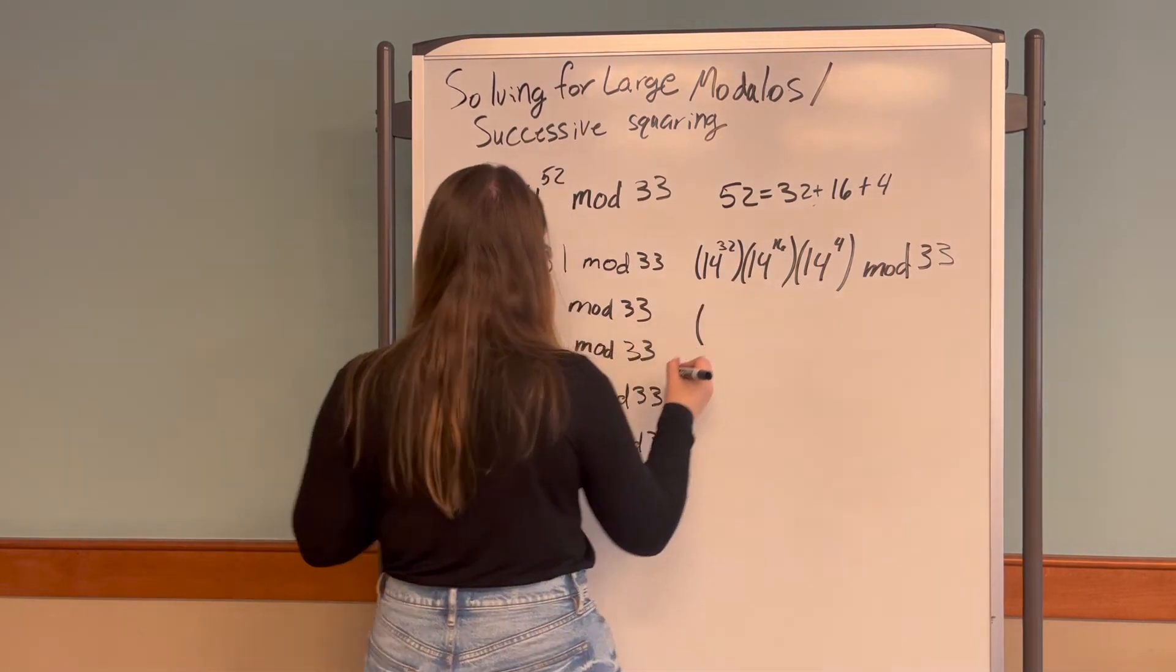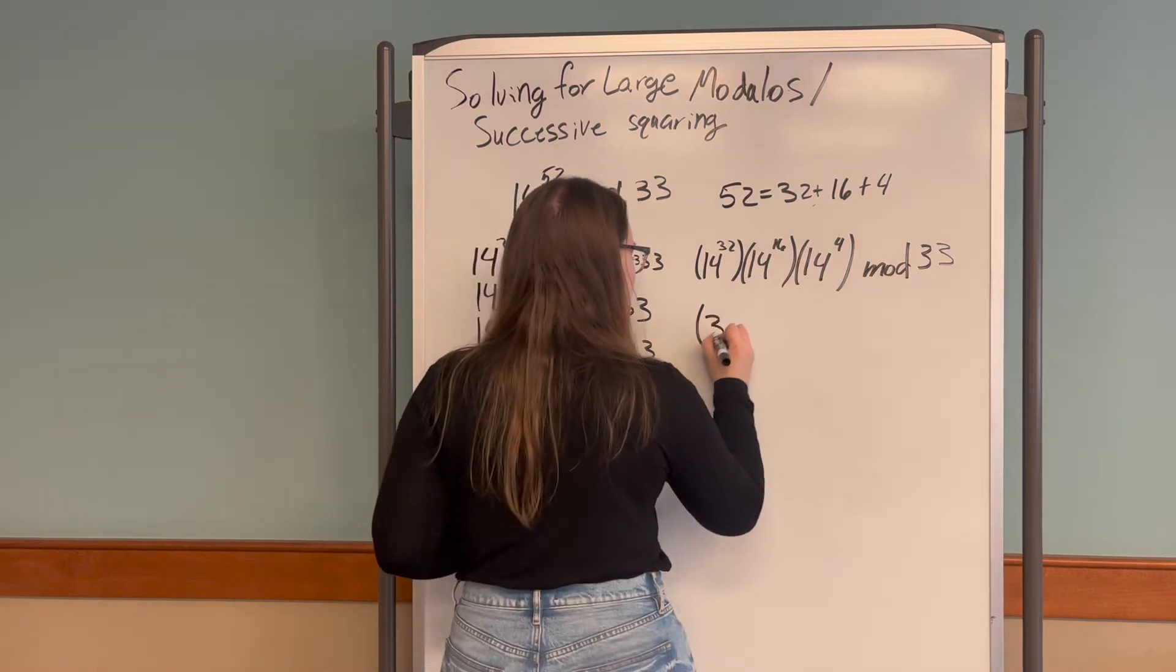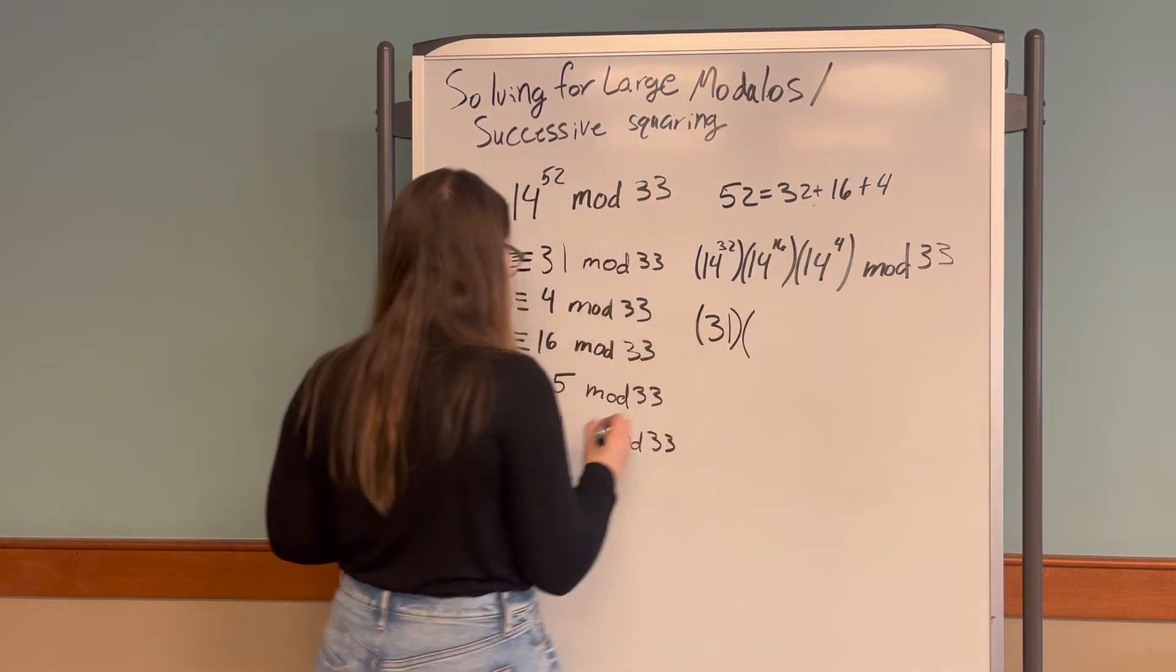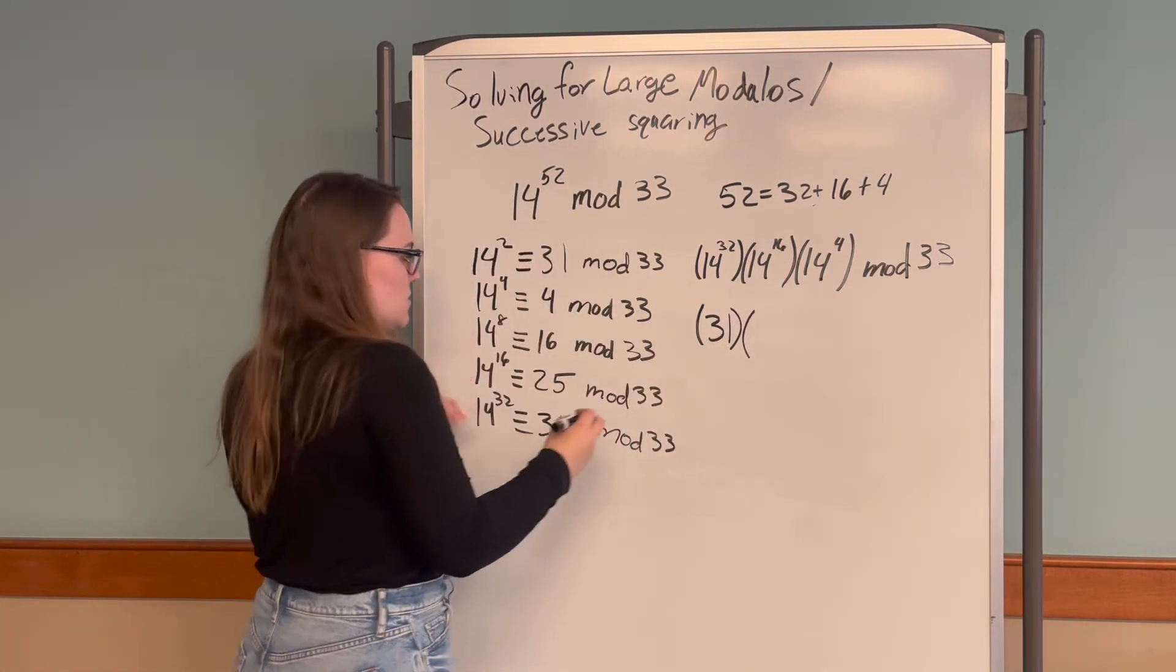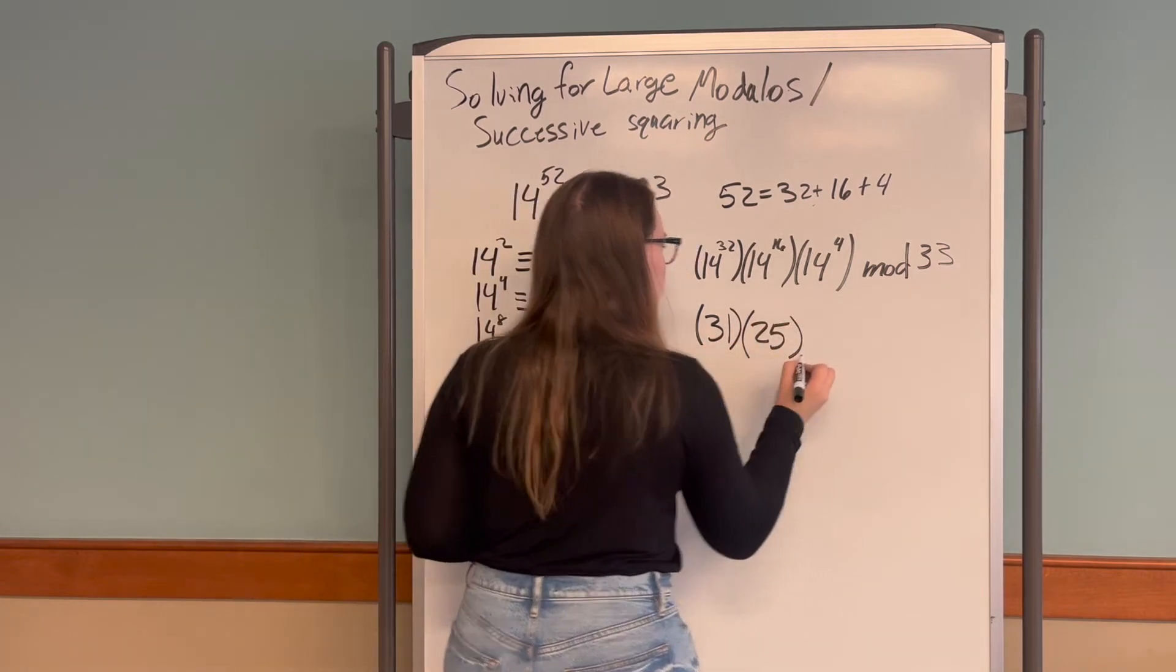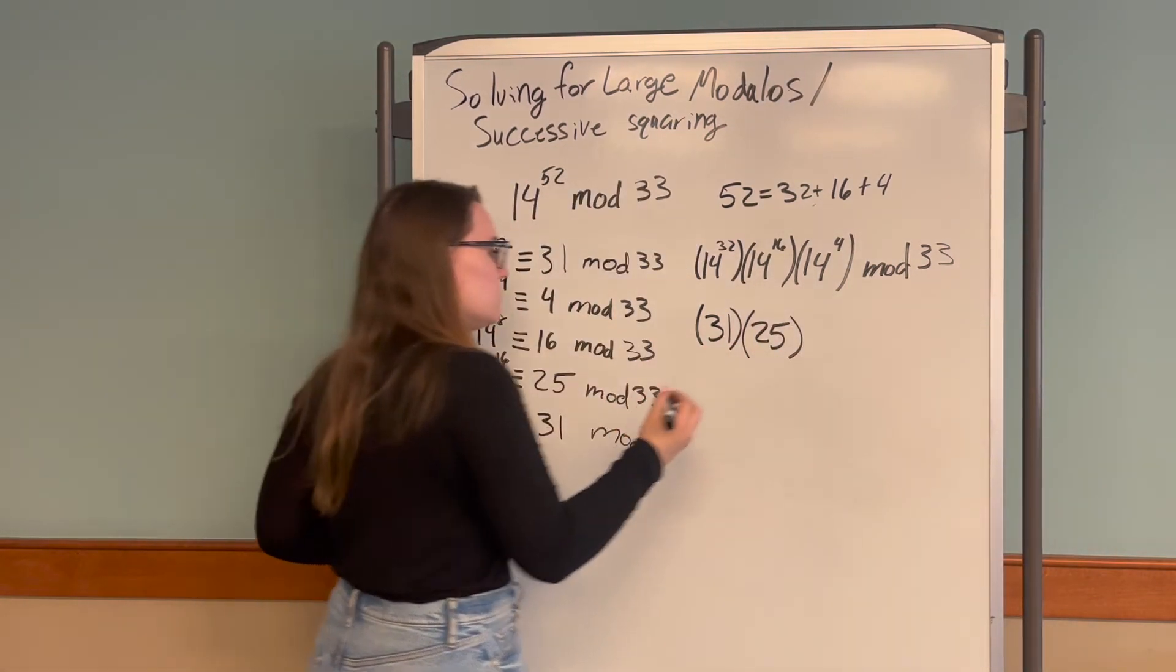So 14 to the 32 becomes 31 mod 33 times 14 to the 16, which is 25 mod 33. And 14 to the 4 is 4.